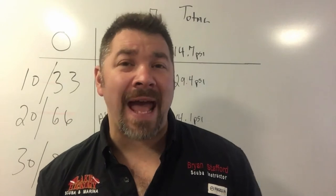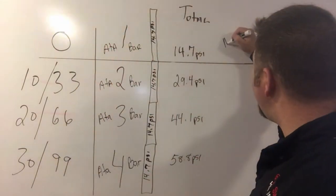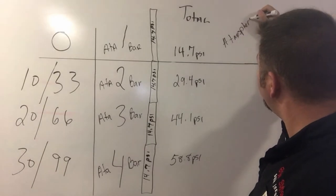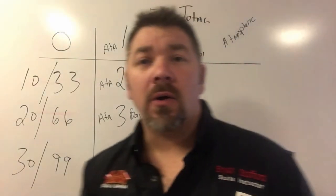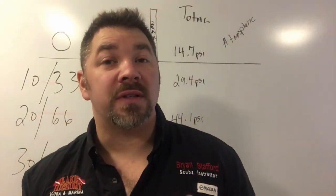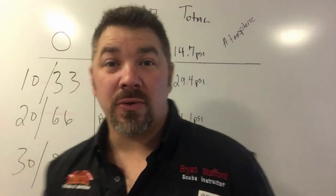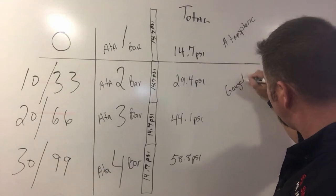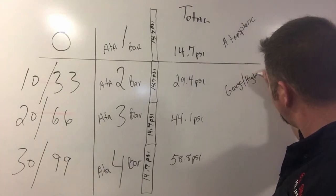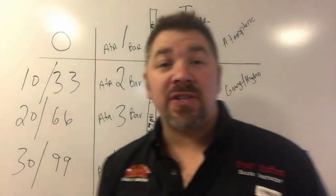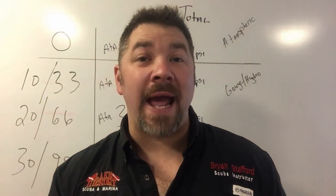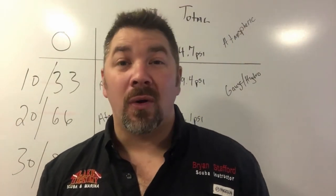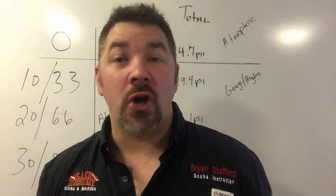The first one is atmospheric pressure. We're also going to talk about gauge pressure, otherwise known as hydrostatic pressure. And last, we're going to talk about atmospheric absolute — sometimes referred to as absolute atmospheric — or what I like to call simply total pressure.